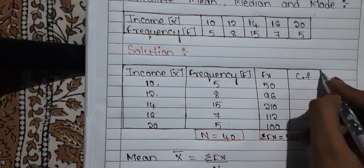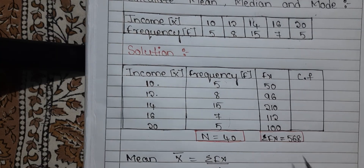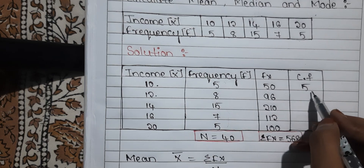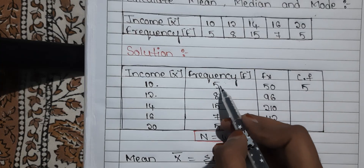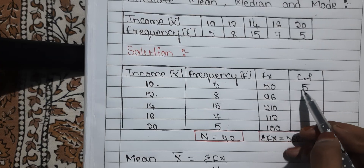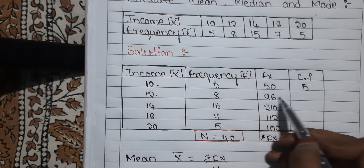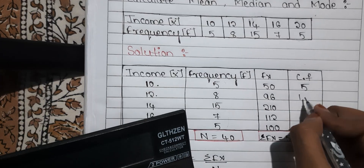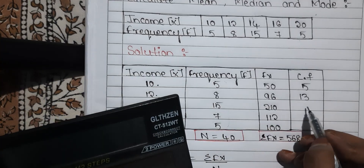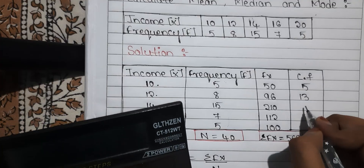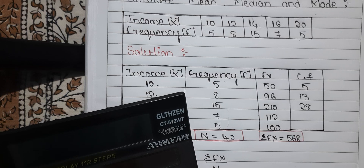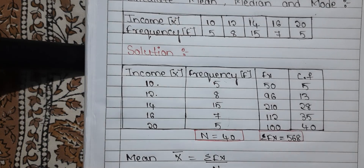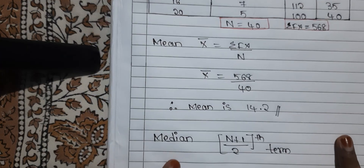Let us find cumulative frequency. The first frequency you take as it is — here it is 5. Then you add this cumulative frequency with the next frequency to get the new cumulative frequency. 5 plus 8 is 13. 13 plus 15 is 28. 28 plus 7 is 35. 35 plus 5 is 40. So this is our cumulative frequency.